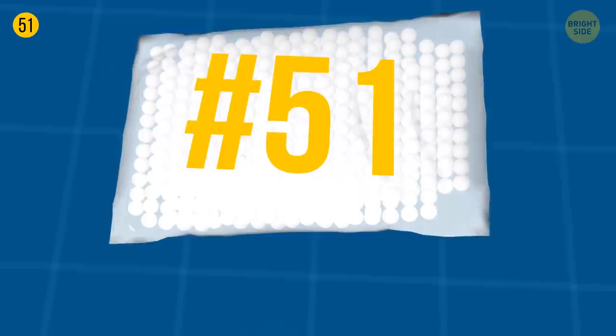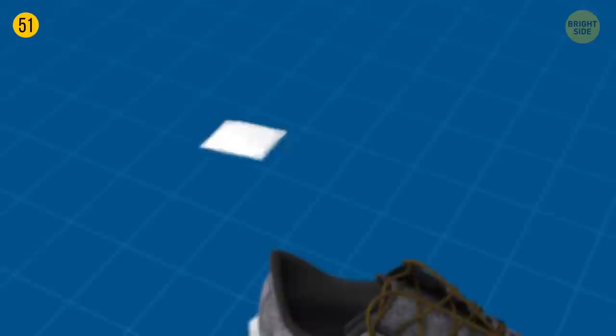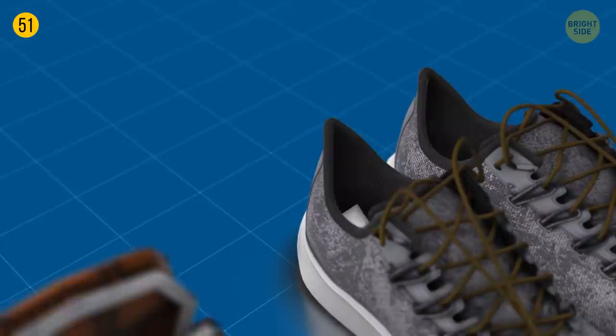Silica gel can often be found in different things you buy, like bags, shoes, and many others. It's meant to absorb excess moisture, so anytime your shoes are a bit wet, just throw in a sachet with silica gel.